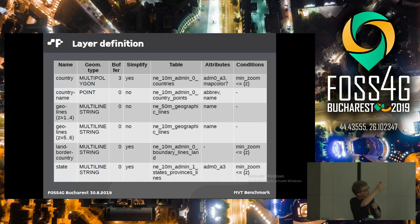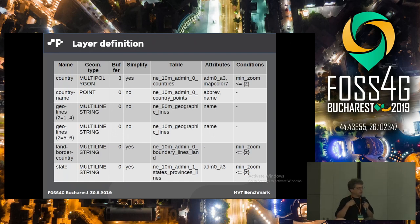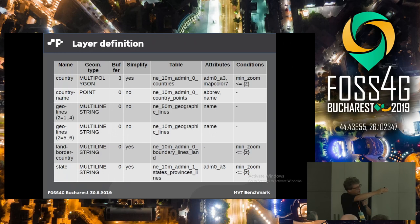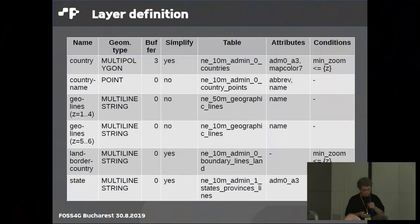Simplification is done for countries, land, border, and states. This is not strictly necessary with this dataset because it is already optimized for making maps — it even has a property which says at which zoom level you should show a feature, which we also use. For instance, states start at deeper zoom levels. We also define some attributes, the tables, and the buffer size for polygons.